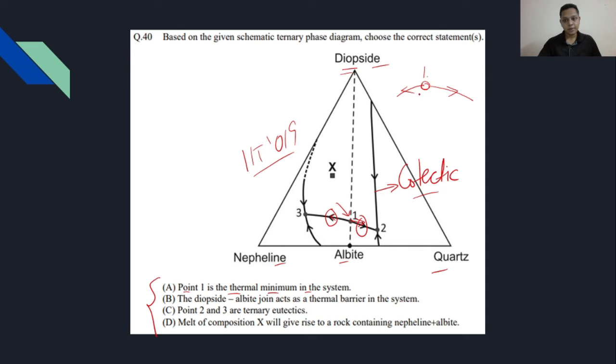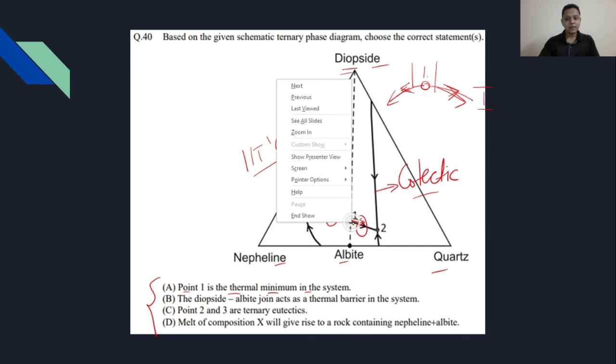This is at a temperature higher than the adjacent ones. I can understand that this point 1 is definitely not the thermal minimum; rather, it's the thermal maximum point. So statement A is incorrect.